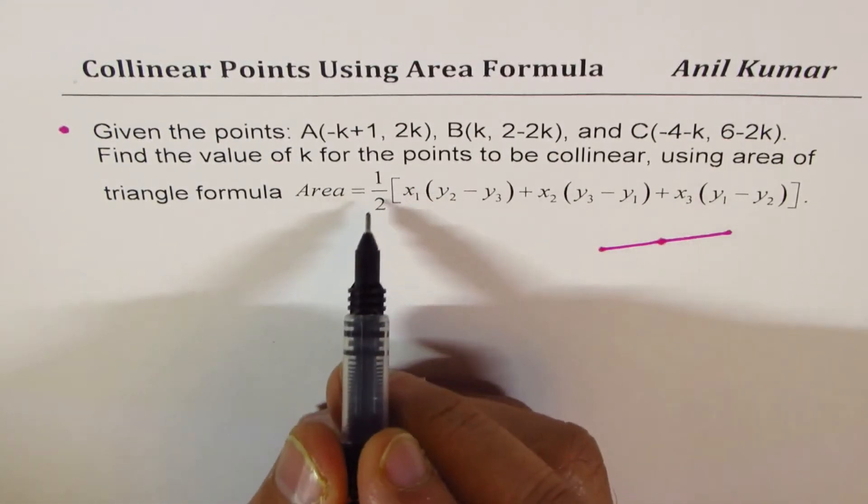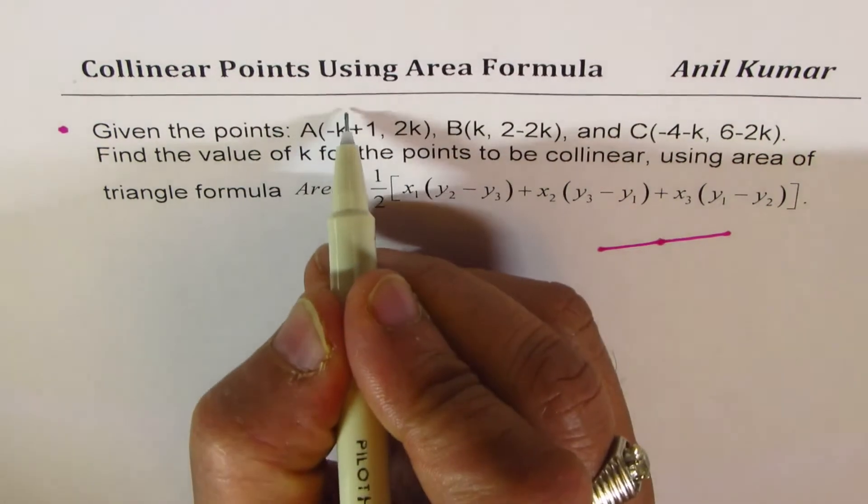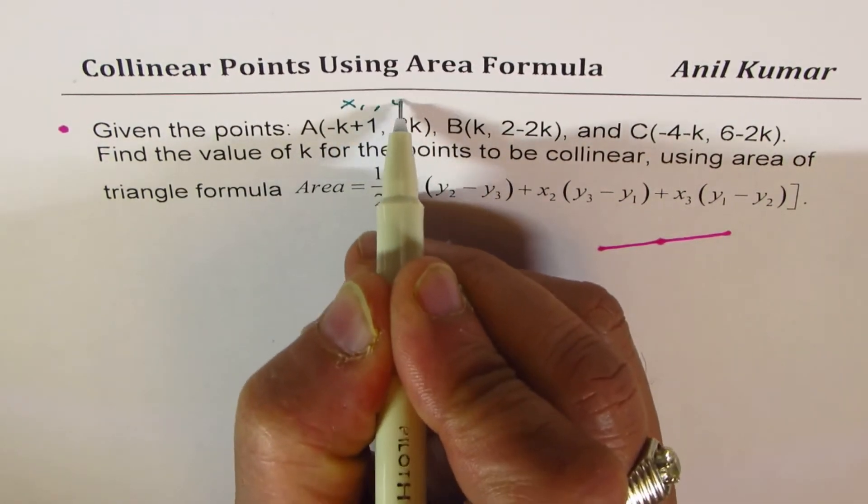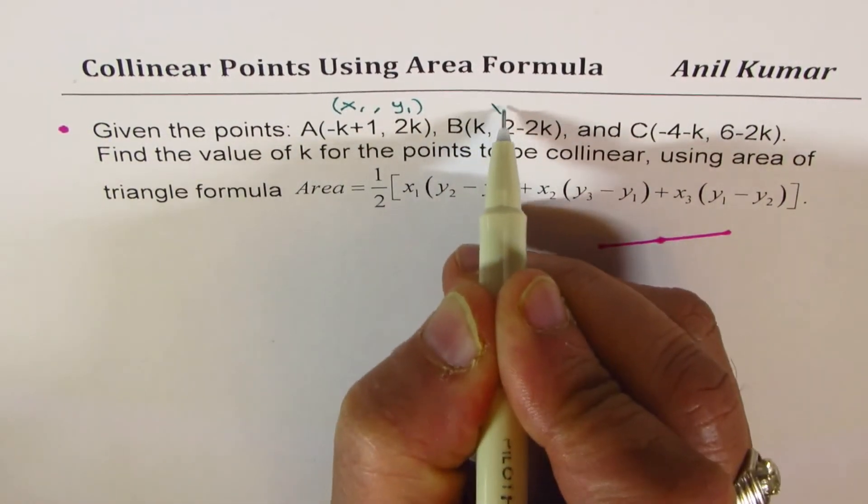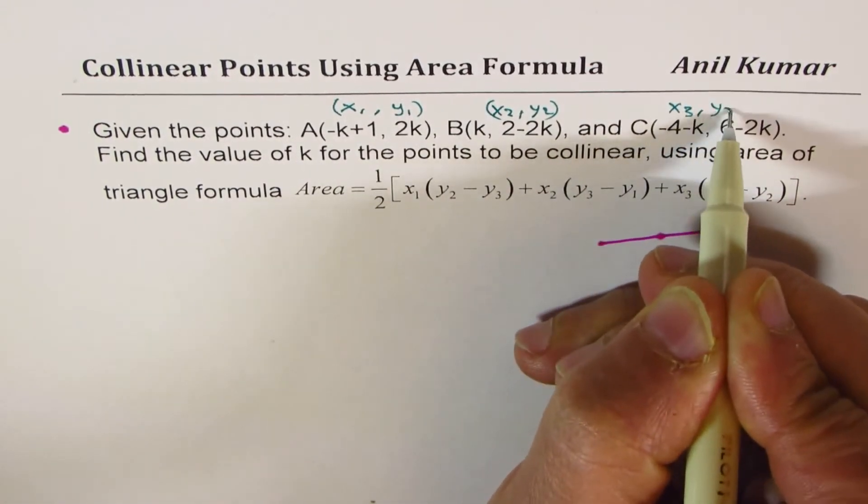So that concept is used to solve this particular question. So that means that this area, let's substitute the values of x1, y1, y2, y3 and calculate k. So here the values are x1, y1, x2, y2 and this is x3, y3.